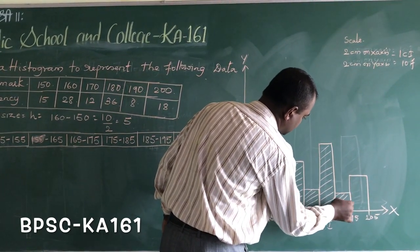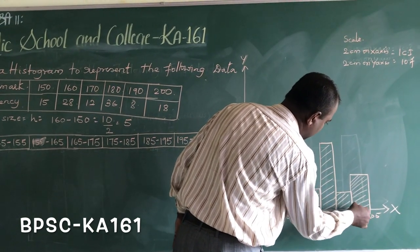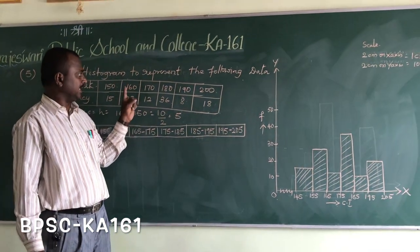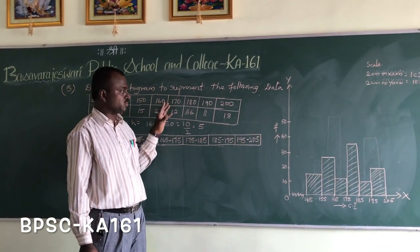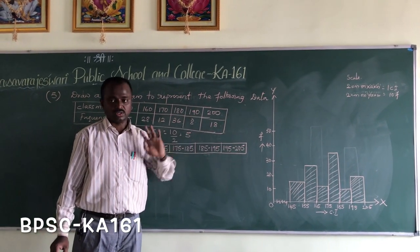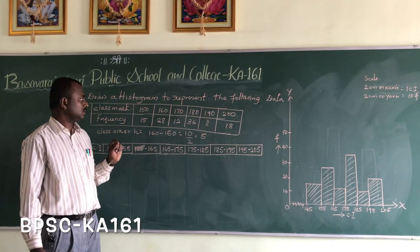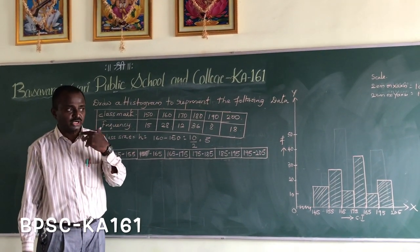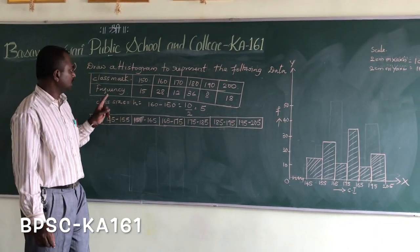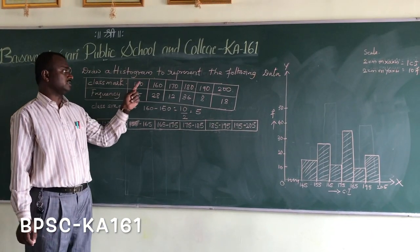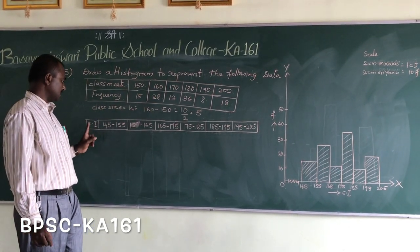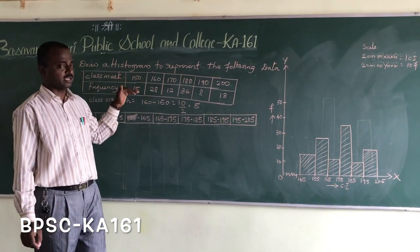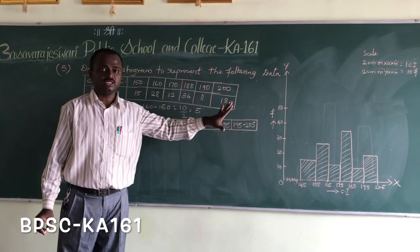So now we have learned how to draw a histogram in three ways. First, if the class interval is given directly in exclusive form. Second, if the class interval is given in inclusive form, how to convert it to exclusive form and construct the histogram. Third, what we saw now: if the class mark is given, how to find the class interval and then represent that frequency distribution on a histogram. These are the different methods they may ask in the examination.